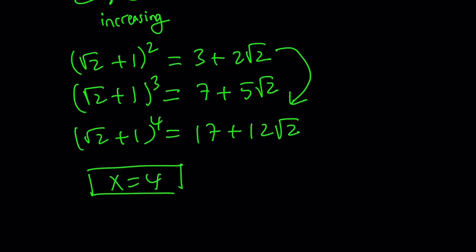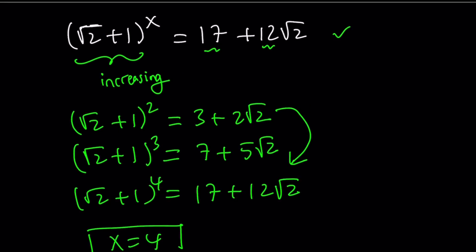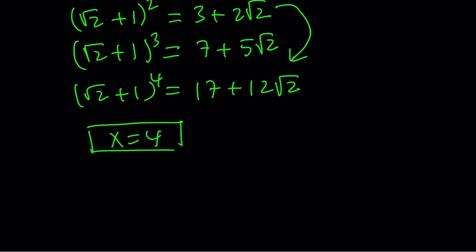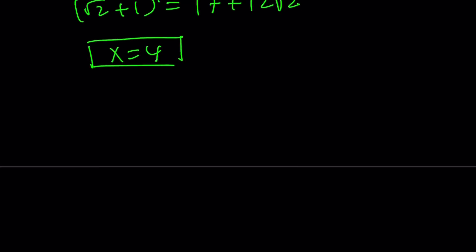But is that the only solution? And even though this function is increasing, our original function is a little different, right? Because it's also adding root 2 minus 1 to the x power and root 2 minus 1 to the power x is actually a decreasing function. So you have the sum of an increasing and a decreasing function. So what is the sum going to be like? But here's what we can take advantage of. We know x equals 4 is a solution and this implies square root of 2 plus 1 to the 4th power plus square root of 2 minus 1 to the 4th power equals 17 plus 12 root 2. But since root 2 plus 1 and root 2 minus 1 are reciprocals, we can go ahead and do the following.